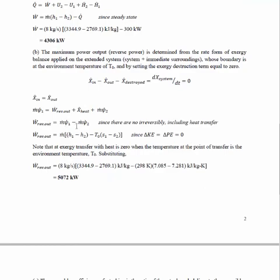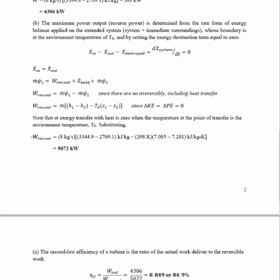Simplification of that equation there, we can eliminate the kinetic and potential energy terms, which gives us the following equation. Substituting those in, we can determine the reversible work produced by this system. So that gives us 5,072 kilowatts. So that's the most work we could ever expect this system to produce.